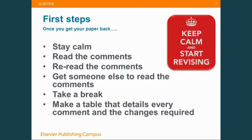The first practical step is to make a table where you can detail every comment and the changes required. Make a table with four columns. In the first column, put the number of the comment the reviewer has made. Then in the second column, paraphrase or rewrite the actual comment — doing this will help you really digest what they're saying. Do this for both sets of reviewer comments. In the third column, put your response in detail. In the fourth column, put the page number, line numbers, figures, and tables where the point is specifically addressed. This helps break down specific issues, especially when reviewers make several points together or write in narrative form.